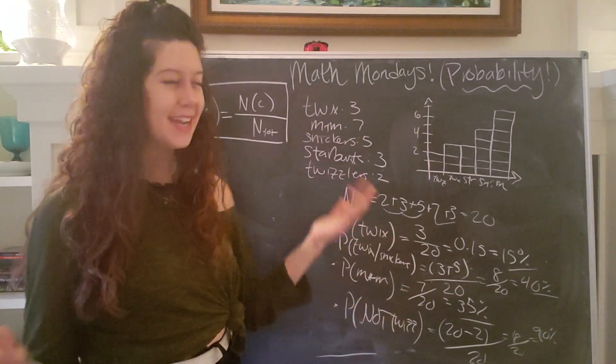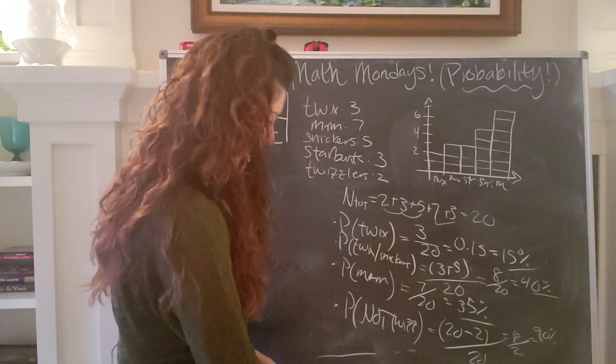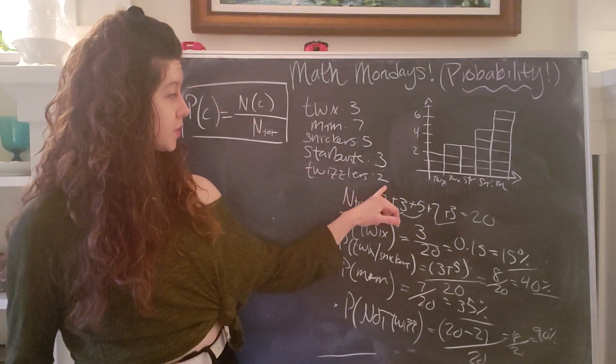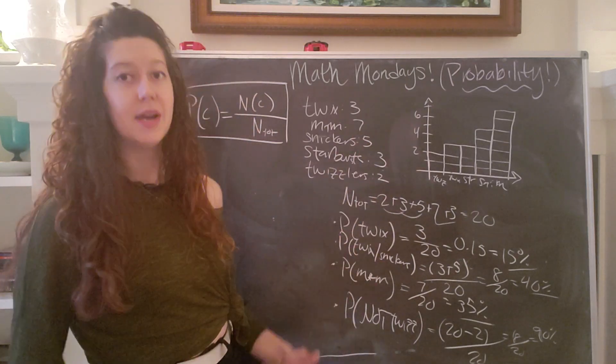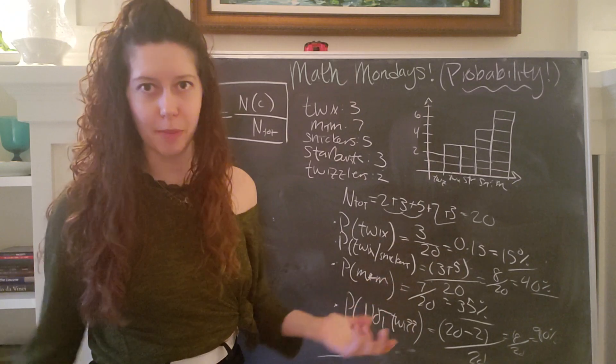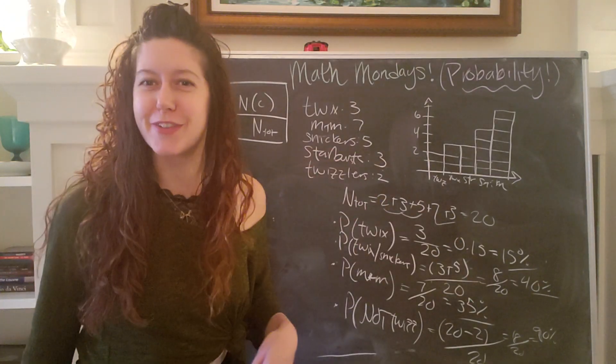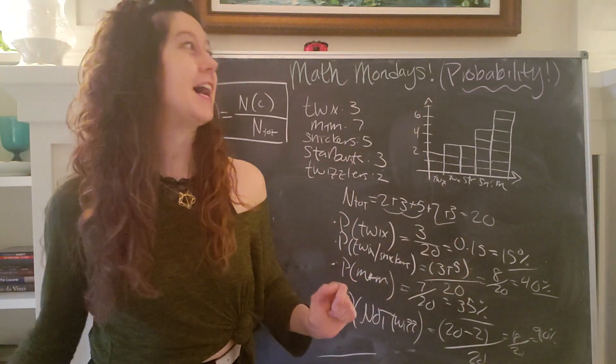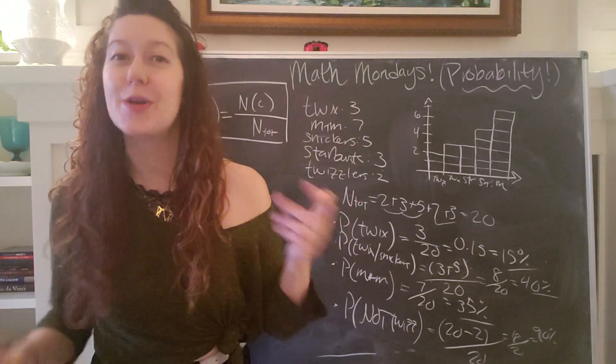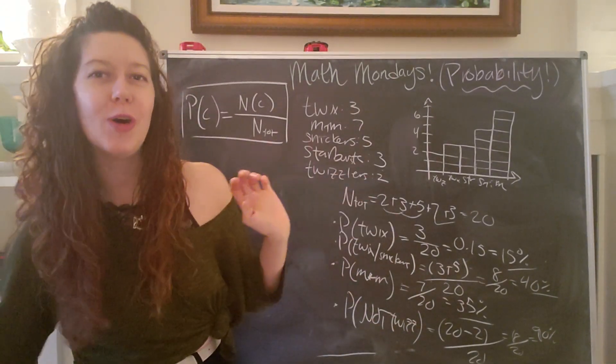Pretty cool, right? Yay for probability. If I had more Twizzlers in the bag relative to the other ones, the probability of getting a Twizzlers would go up and I would be a sad panda. Or I would just invite my friends that like Twizzlers over and be like, have at it until they dwindled the Twizzlers down. And then I am happy. They're happy. We're all happy.